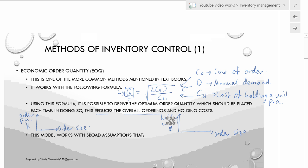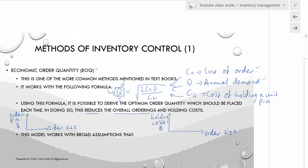One method that helps determine the quantity to order — avoiding shortages and excessive stocks — is the EOQ, or economic order quantity. It is commonly taught in many textbooks and is based on a key formula: order quantity equals the square root of 2 multiplied by CO (cost of order) multiplied by D (annual demand), divided by CH (cost of holding a unit per annum).